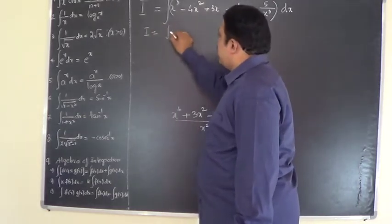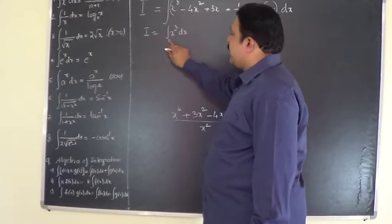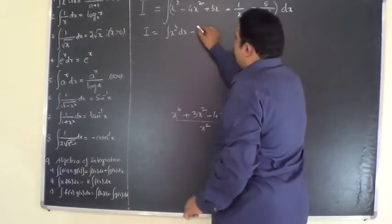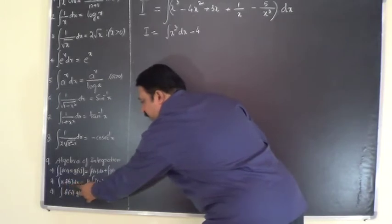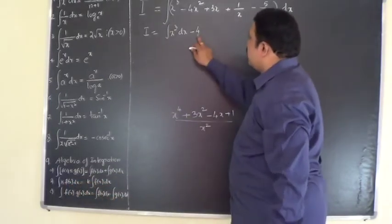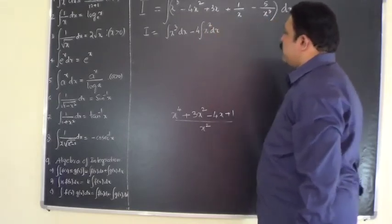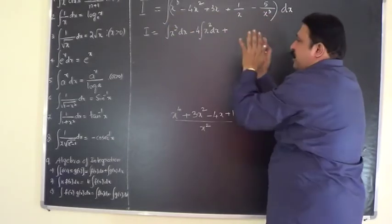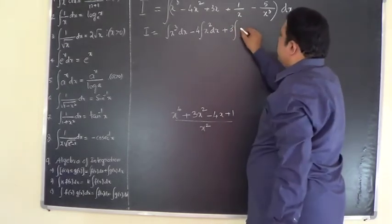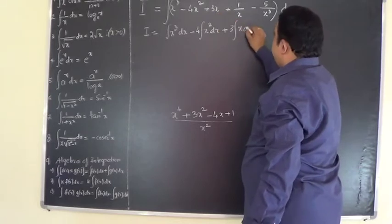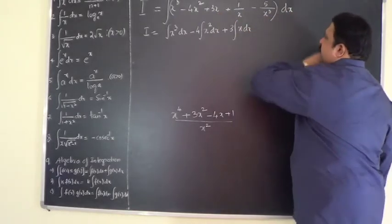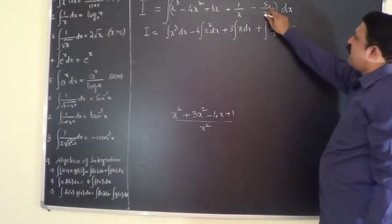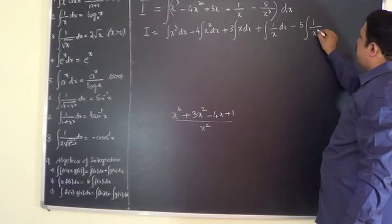I will separate each of these functions. Whenever you write an integral sign it should be followed with dx. For the term minus 4x squared, 4 is a constant k in k·f(x)dx, so k is taken outside the integral sign. Write 4 outside, then integral x squared dx. Plus 3 times integral x dx — 3 is a constant, write it outside. Then integral 1 by x dx, minus 5 — which is a constant in the numerator — times integral 1 by x cubed dx.